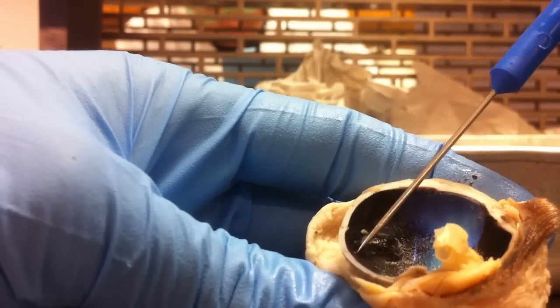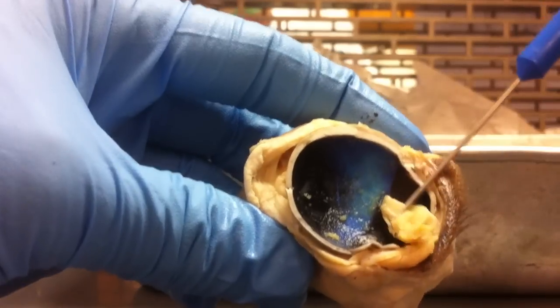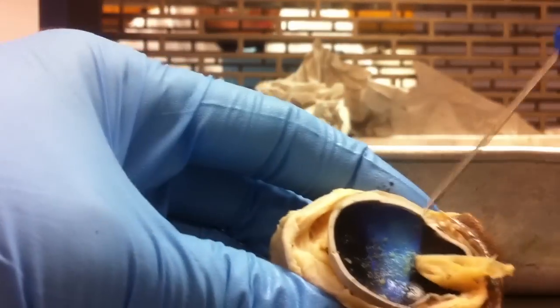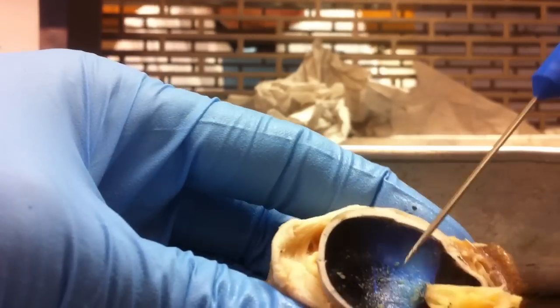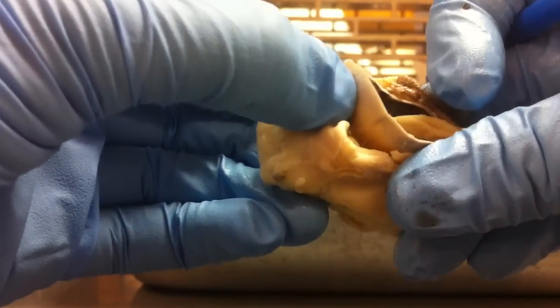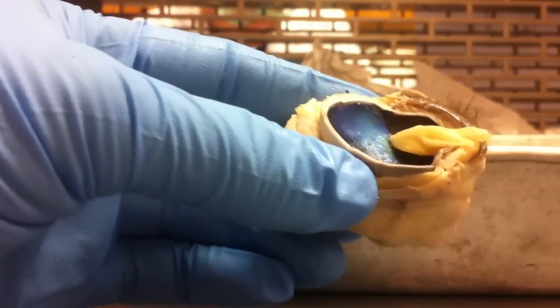Behind that is your choroid coat, which is the black part, and your tapetum lucidum, which is the bluish coloring right here. And your sclera.